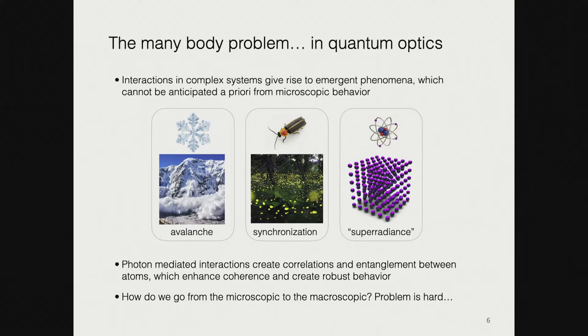Many-body physics, where we have many quantum interacting particles, is hard. This is because interactions between particles give rise to complex physics which cannot be understood from a detailed study of the microscopic individuals or entities. In the classical realm, we have examples like an avalanche, which cannot be understood from a detailed study of the shape of a snowflake. Another example is synchronization, which cannot be predicted from the biology of a single firefly.